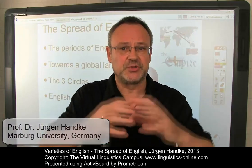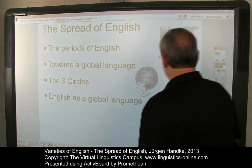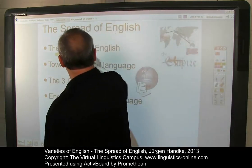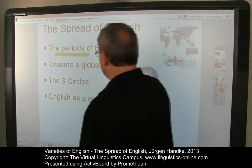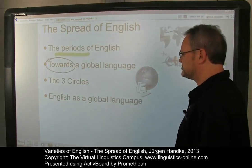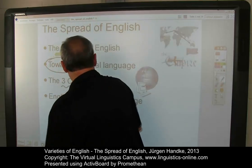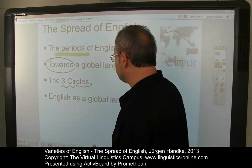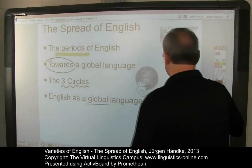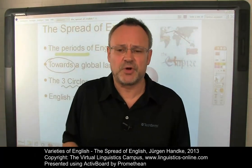Hi, I welcome you to a short e-lecture where I will briefly discuss the development of English from a regional to a global language. I will proceed as follows: first, I will list the central periods of English and will then talk about the main triggers towards the development of English as a global language. Using the three circles model, I will then look at the main types of English in a global context. So, let's start with a brief historical overview.